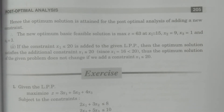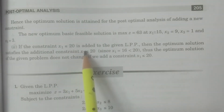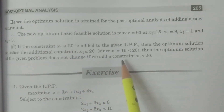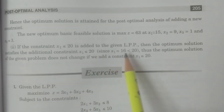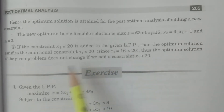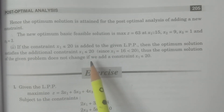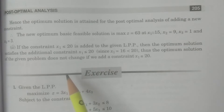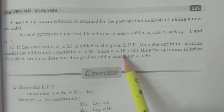Now coming to the second problem — if the constraint x1 ≤ 20 is added, then the optimum solution satisfies the additional constraint x1 ≤ 20, since x1 = 16 and 16 < 20. Therefore it satisfies x1 ≤ 20. The optimum solution of the given linear programming problem gives x1 = 16.